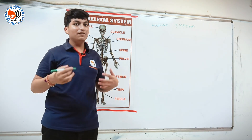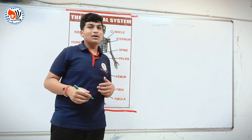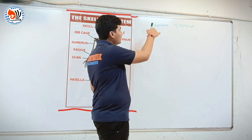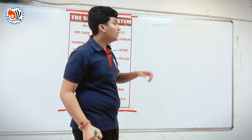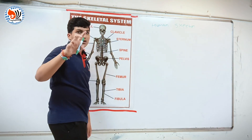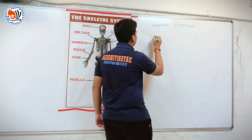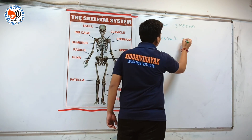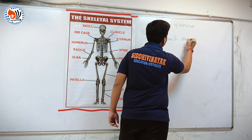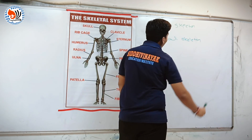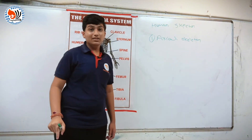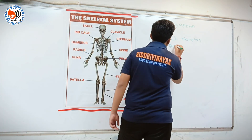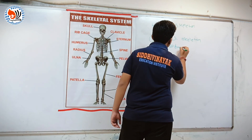The human skeleton gives shape to our body and it supports our muscles. As I told you, in the human skeleton there are two types. First is axial skeleton. In axial skeleton there are 80 bones.